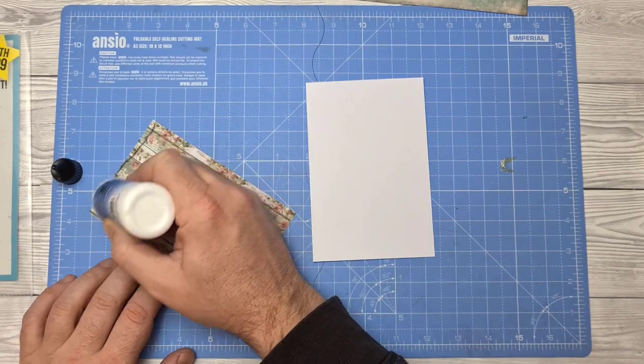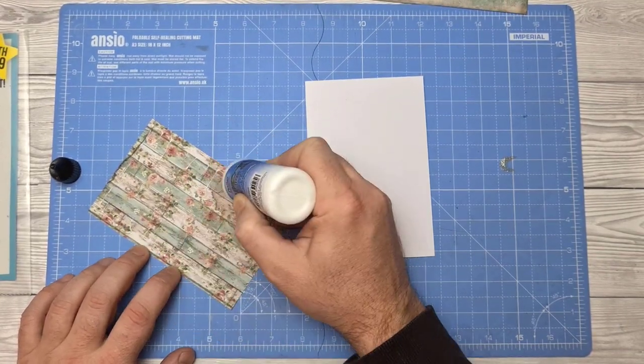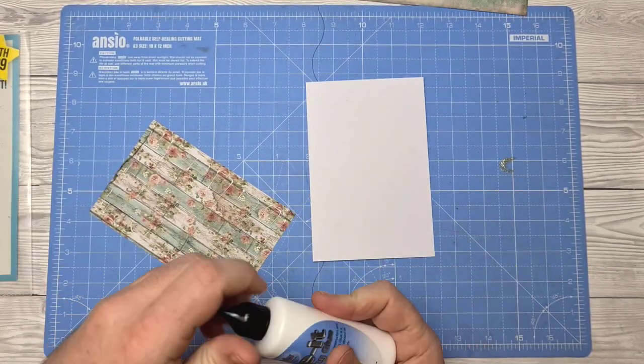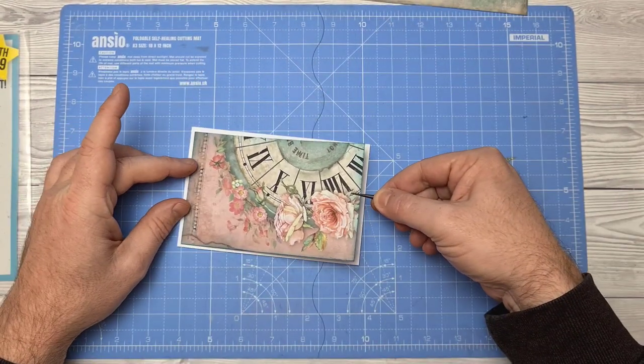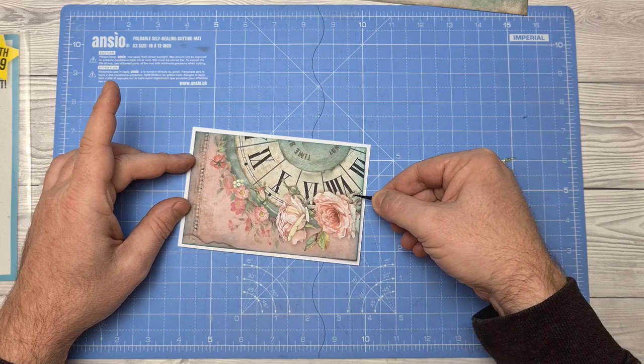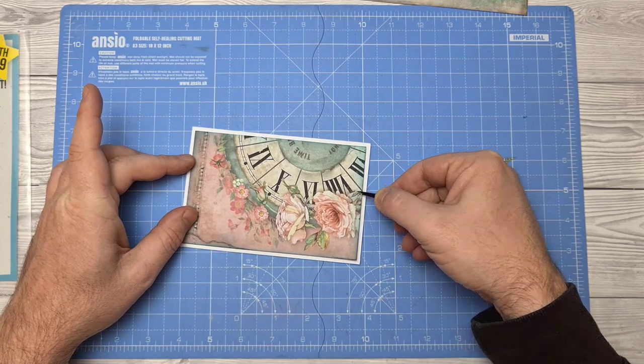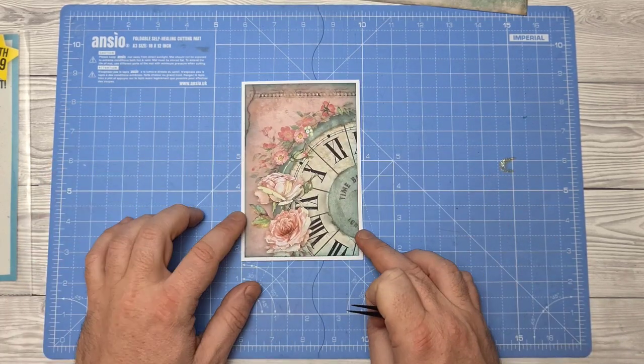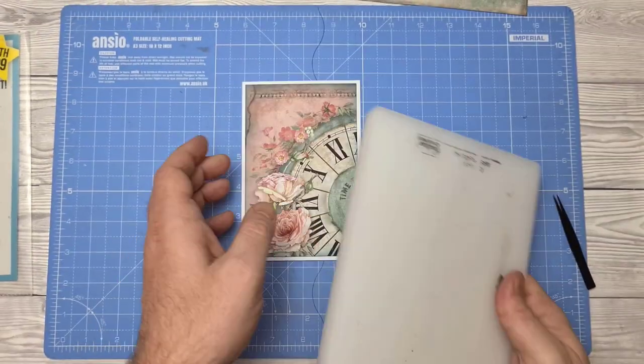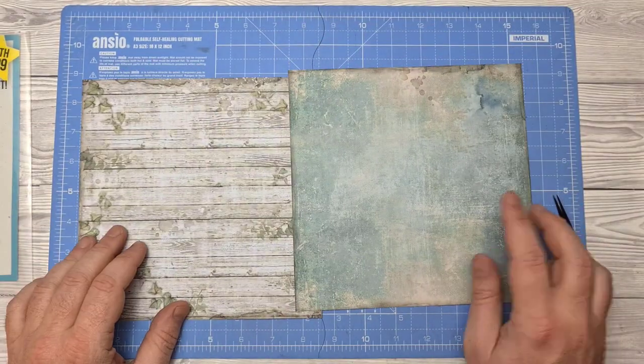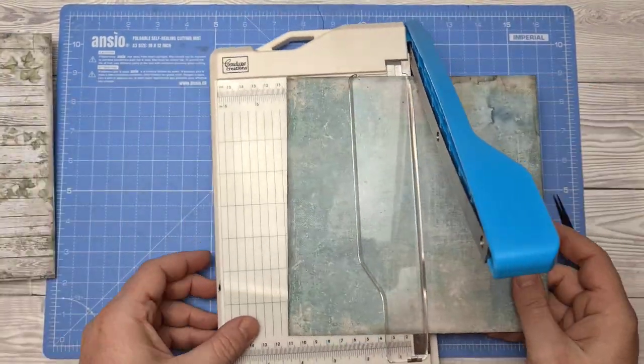For sticking my layers I'm going to be using the Pin Flare Book Binding Glue. I just find it's a brilliant glue for quick adhesion and it doesn't bubble or warp your papers. You can use whatever you like though. If you prefer tape runners or double sided tape that's up to you. Okay, that's my background layer on. To keep it flat I was just putting a bit of heavy plastic on the top.